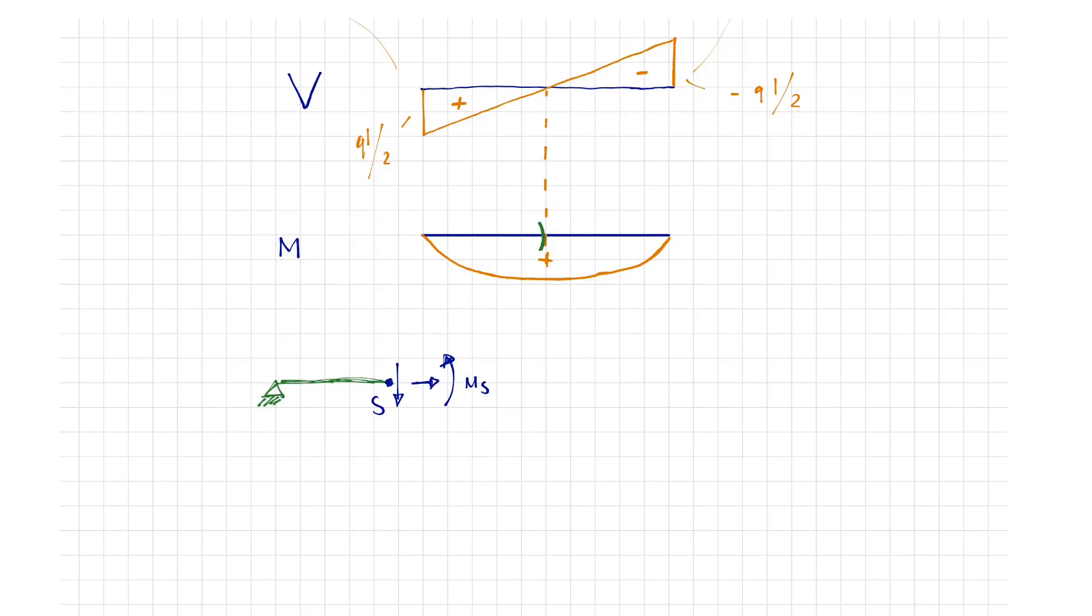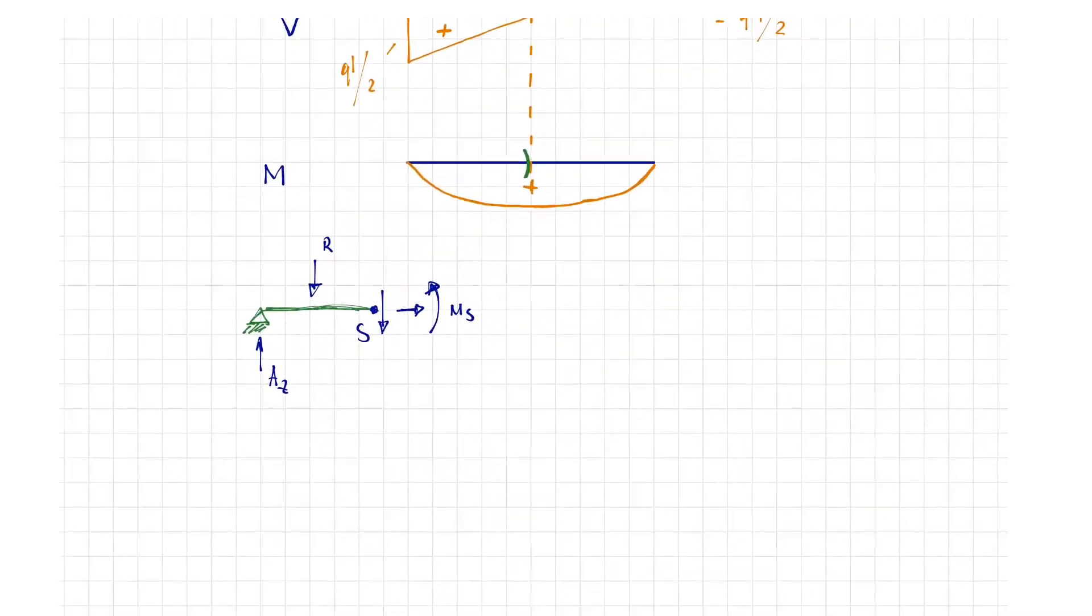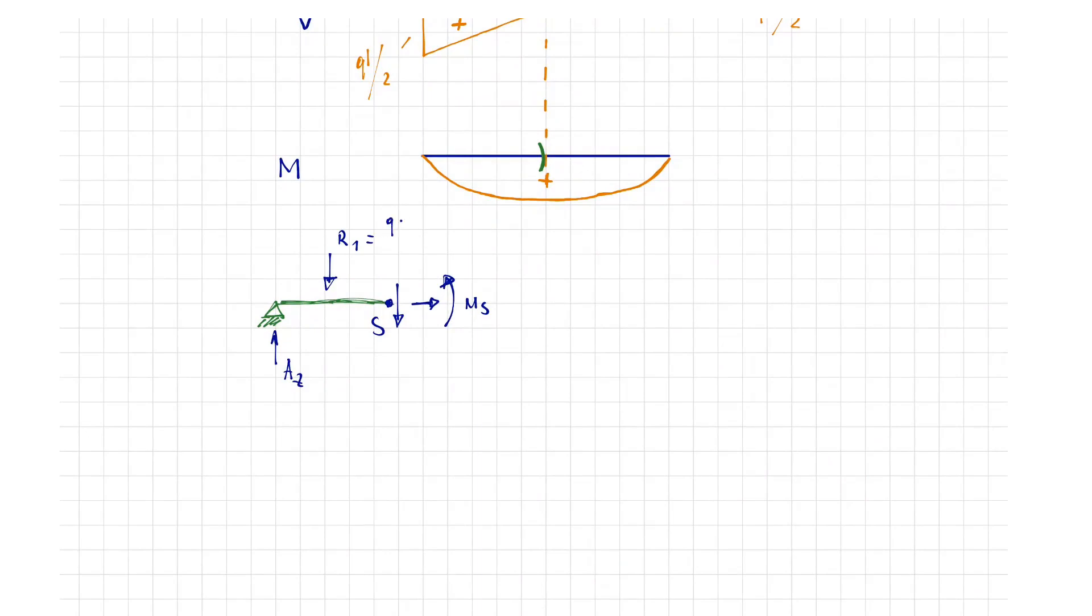On the left, the support force acts upwards. In the middle of the half-span length, we can generate the resultant of the distributed load. It is QL through 2.